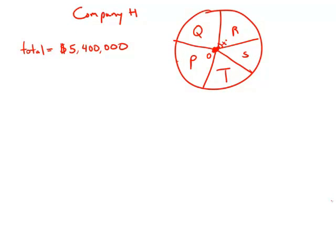In this problem we're given a pie chart or circle chart representing company H's total expenses broken down by expenses for each of its five divisions. If O is the center of the circle and company H's total expenses are $5,400,000, what are the expenses of division R?